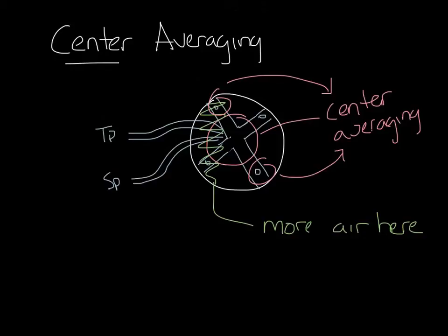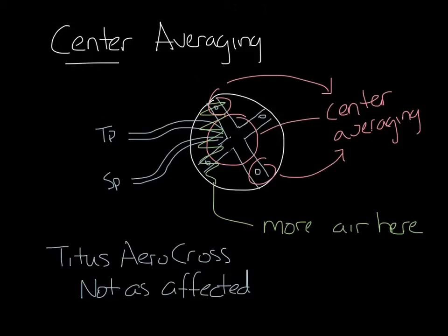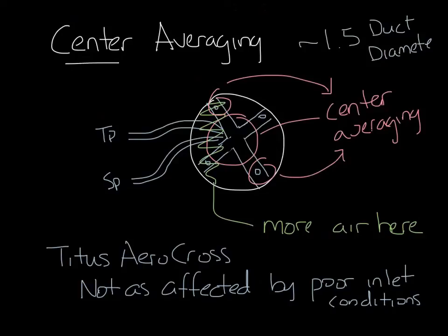This means that VAV boxes with center averaging flow sensors, like the Titus AeroCross, are not affected by poor inlet conditions as much as linear averaging sensors are. Because of this, you need less straight duct into the box inlet, about one and a half duct diameters for our flow sensor, compared to about three duct diameters for a linear averaging type sensor.